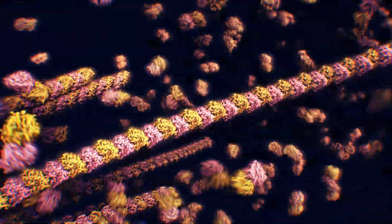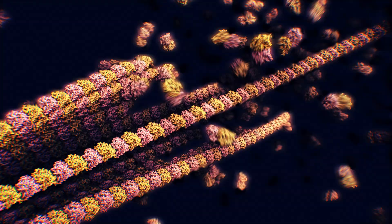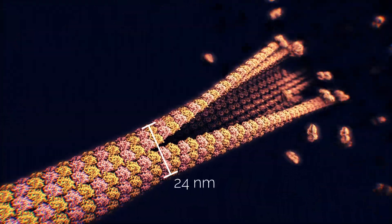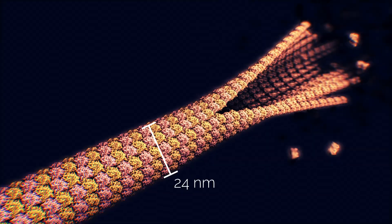Protofilaments tend to bundle up into hollow, tubular structures, microtubules. They are 24 nanometers in diameter and generally consist of 13 protofilaments.